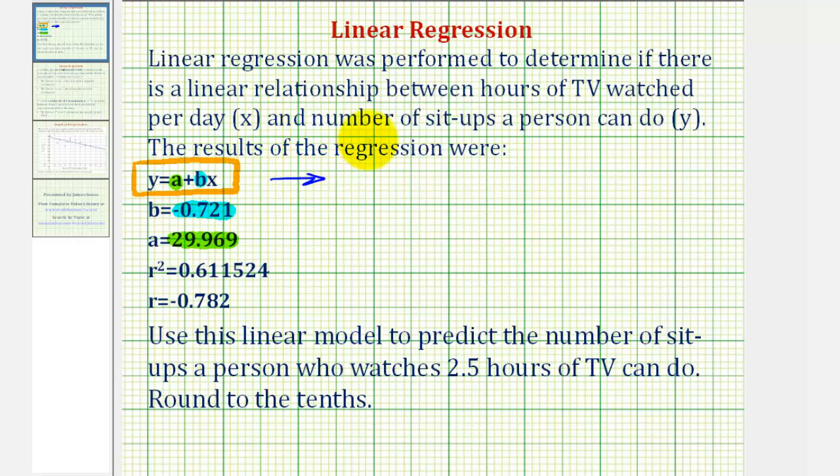Which means our linear regression equation would be y equals 29.969. And then since B is negative, we'll have minus 0.721 times x.